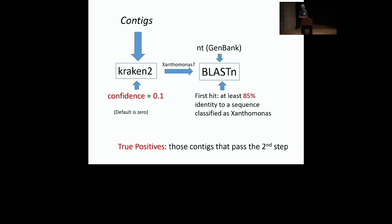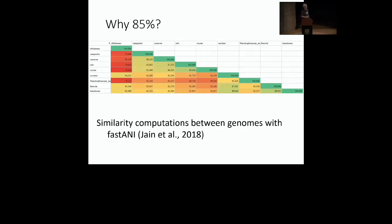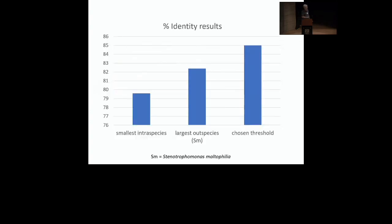The second step: for those contigs that Kraken2 labeled as Xanthomonas, we run a BLASTN step. The BLASTN uses as database the whole of GenBank — the NT database — and we classify the result as Xanthomonas if the first hit has at least 85% identity to a sequence classified as Xanthomonas in GenBank. The true positives are those contigs that pass this second step. To justify the 85% threshold, I did a comparison of a selected subset of Xanthomonas genomes using the FastANI program.